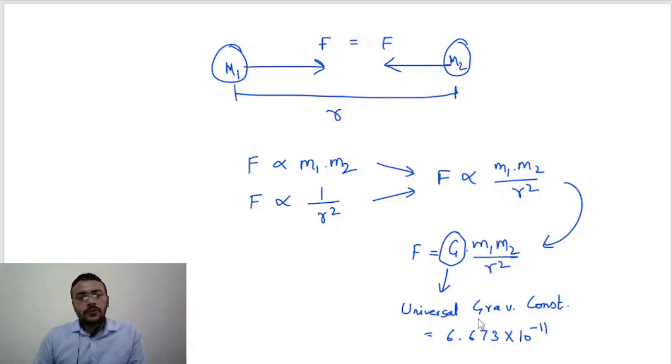Now look, if we want to calculate the SI unit for G, we must know that the SI unit for force is newton and the SI unit for mass is kg, so here will come kg square, and here it will come meter square since it is a distance. So the SI unit for G is newton meter square per kg square.